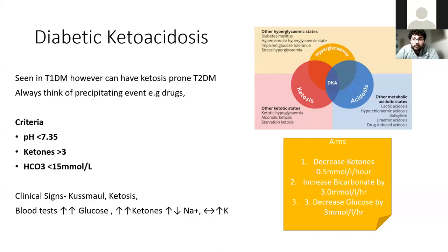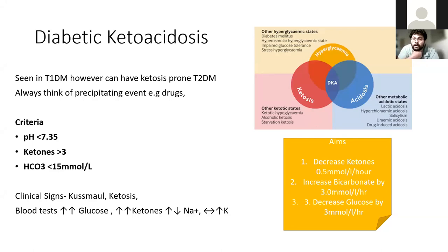In terms of the aims of treatment, you try to treat the underlying cause, but you also want to start insulin — usually 0.1 units per kilo per hour — and do regular VBGs to assess the benefits. You will give general fluids at 1-, 2-, or 4-hourly intervals. The aims are to decrease ketones by 0.5 millimoles per hour, increase bicarbonate by 3 millimoles per litre per hour, and decrease ketones by 3. If you're not reaching those targets, you need to change the insulin rate.